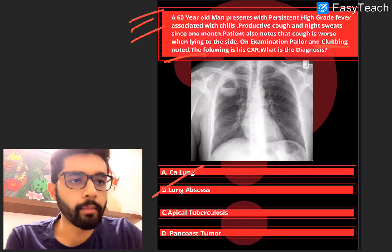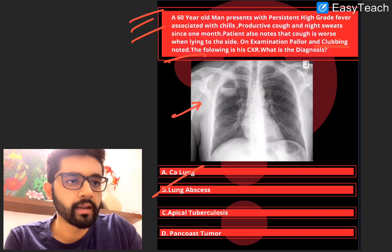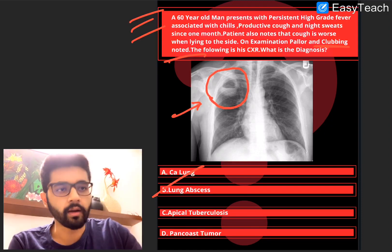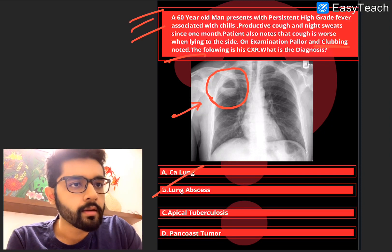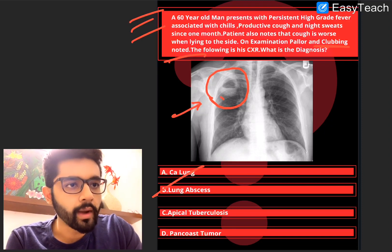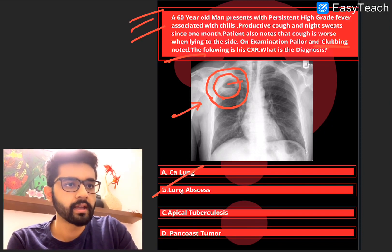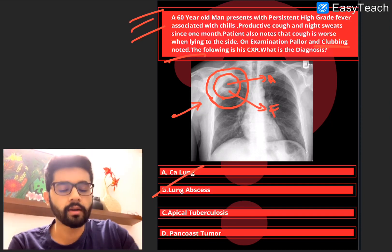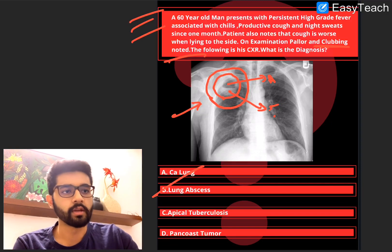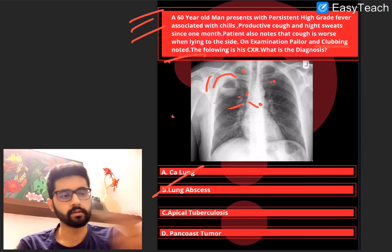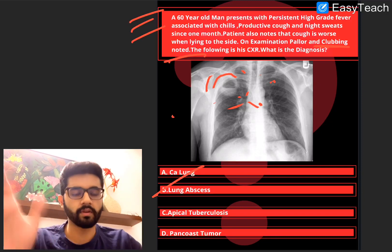Now we'll talk a little bit about this x-ray for those who couldn't identify. Firstly, you can see a well-circumscribed mass in the right upper zone. And you can see that it has a thick, well-defined wall. And most importantly, you can see an air-fluid level — this is the air and this is the fluid of the collection. An air-fluid level is typical of an abscess. So all the features of an abscess you can see in this x-ray. Very easy, very straightforward question.